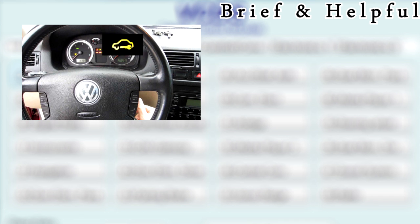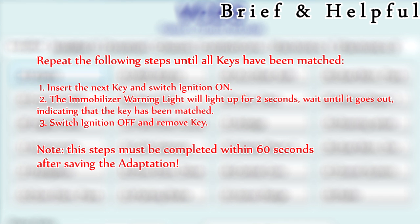Switch off the ignition and remove the key. Repeat the following steps until all keys have been matched: insert the next key and switch ignition on. The immobilizer warning light will light up for two seconds - wait until it goes out, indicating that the key has been matched. Switch ignition off and remove the key. Note: these steps must be completed within 60 seconds after saving the adaptation.